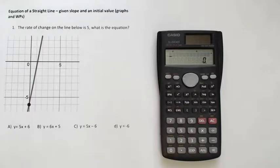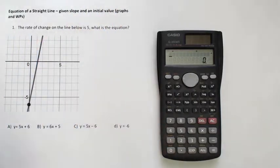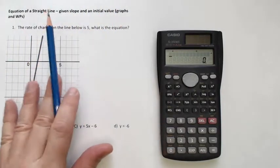Hey guys, this is the equation of a straight line given slope and initial value, graphs and word problems. This means sometimes we'll get our information from graphs and sometimes from a word problem. Obviously this one's from a graph.